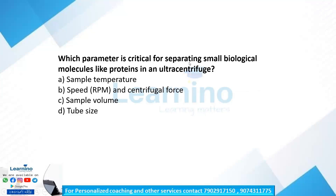Which parameter is critical for separating small biological molecules like proteins in an ultracentrifuge? The options include sample complex, Option B — speed and centrifugal force — Option C — sample volume and tube size. Option B, speed and centrifugal force, is the correct answer.